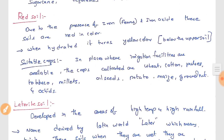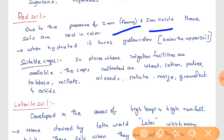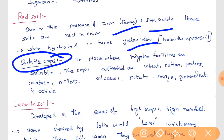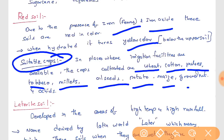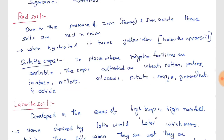Next comes red soil. It is red in color due to the presence of iron oxide. When hydrated, that is when water is mixed in, it turns somewhat yellowish in color. Crops suitable for red soil include wheat, cotton, pulses, tobacco, millets, oilseeds, potato, maize, groundnut, and orchards.